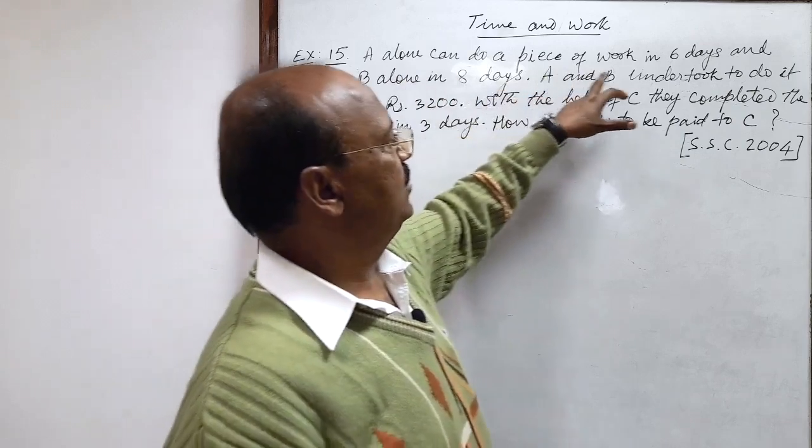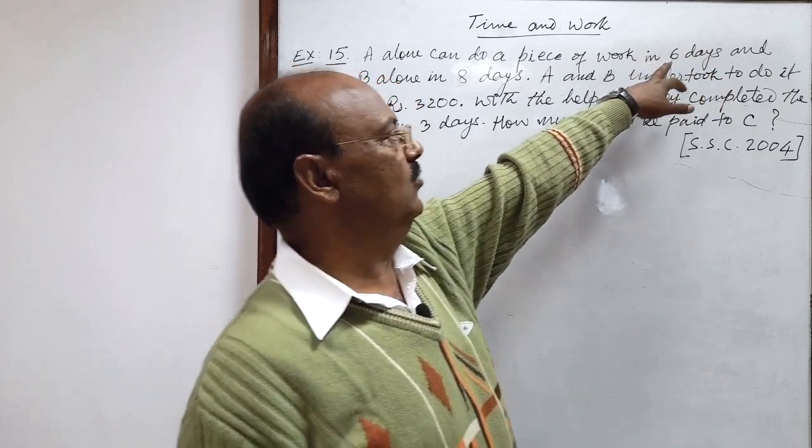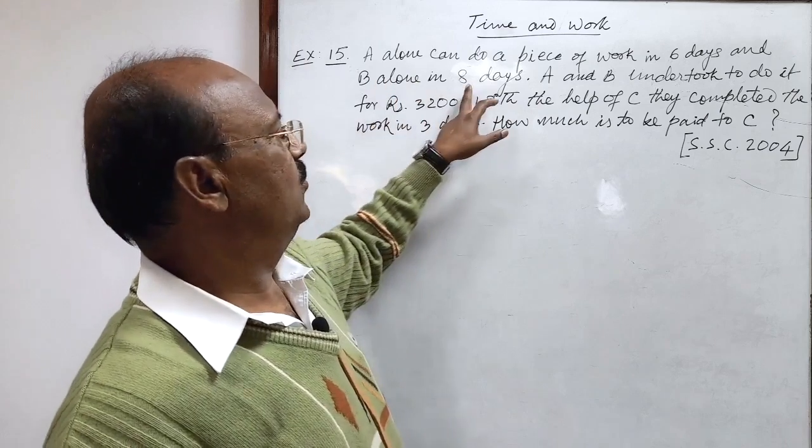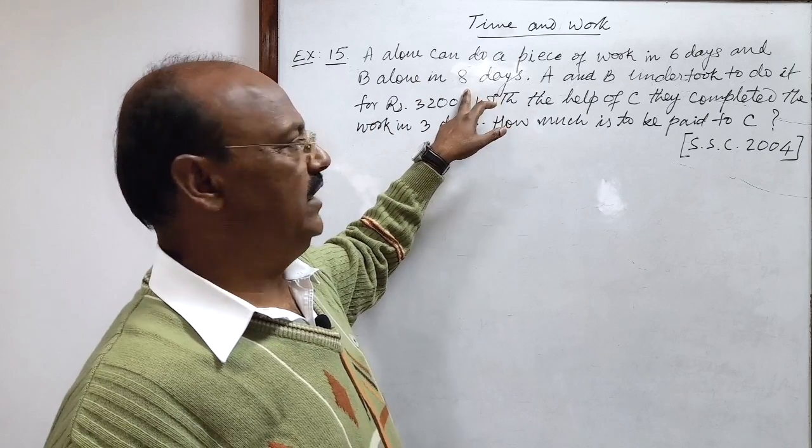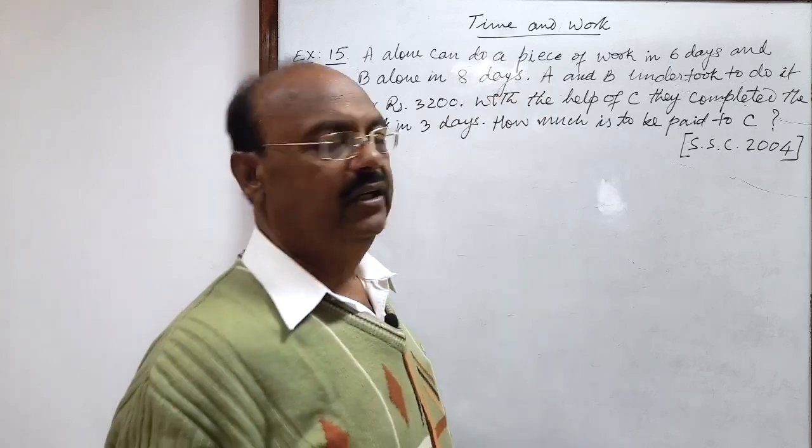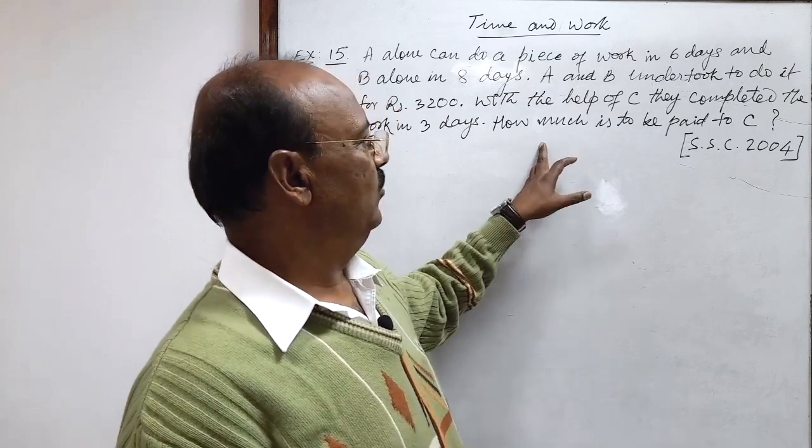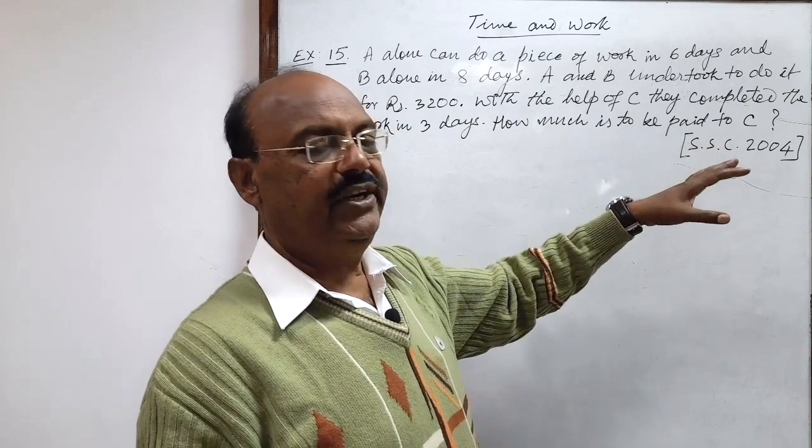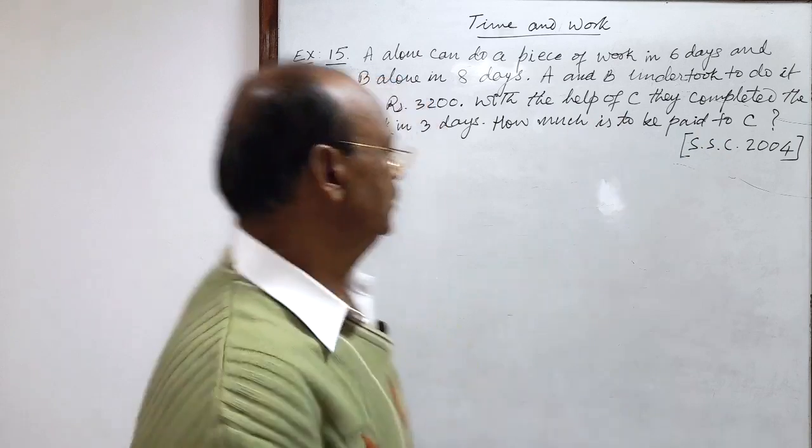So how to get it? A alone can do a piece of work in six days. We can find out amount of work done in one day: one by six. Similarly B does this work in eight days, so B's one day work is one by eight. Sum of one day work of A and B has to be subtracted from one day work of A plus B plus C. Then by subtracting it we will get one day work for C.